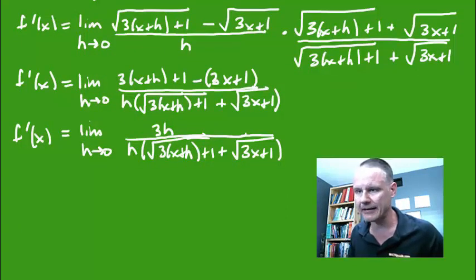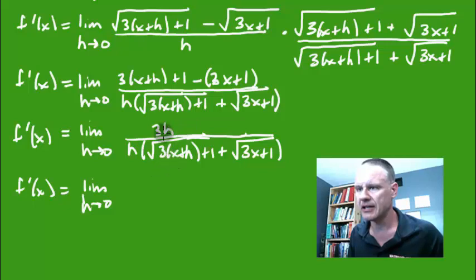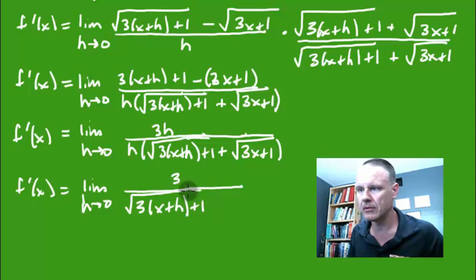So I got the square root of 3 times quantity x plus h plus 1, plus square root of 3x plus 1, right there. Now you'll notice that these h's are going to cancel. The h's will cancel and then we'll be left with a 3 in the numerator and then this complicated thing in the denominator. Now I'm going to scroll this down a little bit because I need some more room. I'll scroll it right over there.